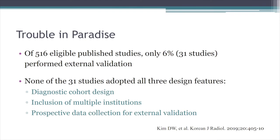A study published in the Korean Journal of Radiology looked at 516 studies that performed machine learning work on medical imaging information and found that only 6% — 31 studies — had conducted external validation. Of those 31 studies, none had adopted all three design features: identifying a diagnostic cohort, including multiple institutions, and doing prospective data collection for external validation. Going forward, it will be critical that we start demanding this kind of information from manuscripts submitted to our journals.